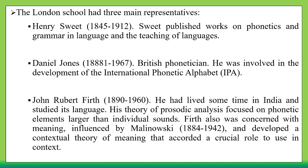The second representative is Daniel Jones, 1881 to 1967. He was a British phonetician who was involved in the development of the International Phonetic Alphabet — the IPA. The IPA consists of the sounds of all languages, including all phonemes and segments, and Jones was one of the key linguists who worked on this system.